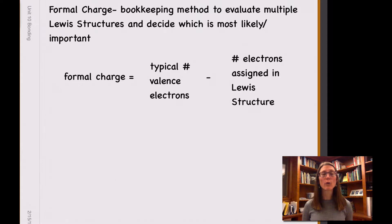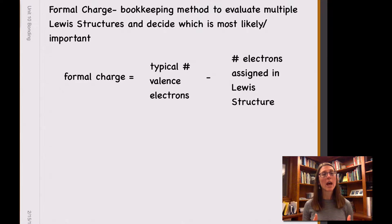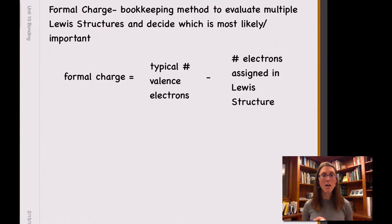With that being said, what formal charge is: it's a comparison between the number of electrons that are normally in the valence shell of an element and how many electrons have been assigned to it in a Lewis structure. The number of electrons assigned to an element in a Lewis structure are the number of lone electrons — the lone pair electrons are non-bonding electrons that surround it — as well as half of the electrons that are associated with its bonds.